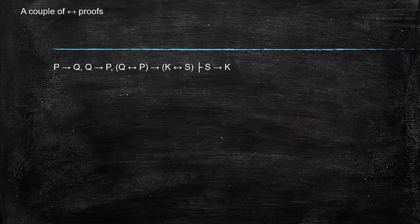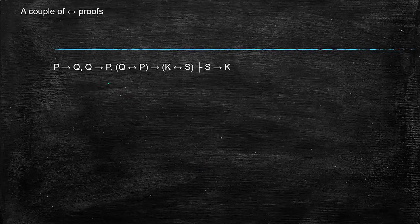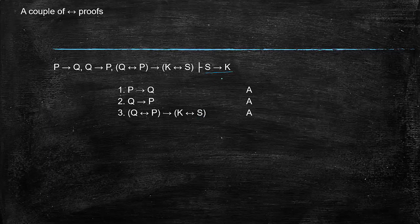So let's look at a couple of proofs. So here we have if P then Q, we have if Q then P, and we have Q if and only if P then K if and only if S. And what we want to infer here, we want to derive, is if S then K. Okay? So if you think about this for a second, go ahead and shut it down and see how you would do it.